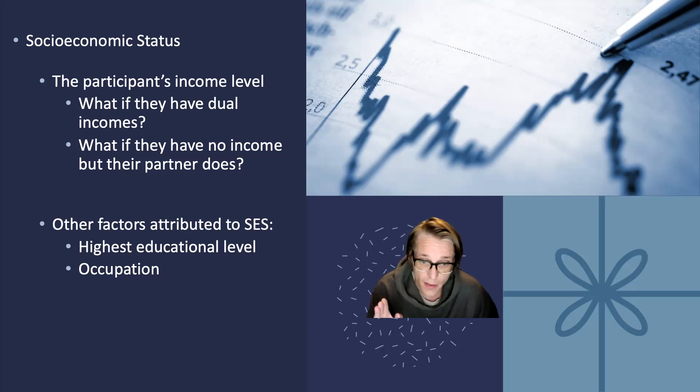We can also construct indexes or scales to measure a concept using multiple data points. An index is constructed by simply accurately scoring assigned to an individual attribute across multiple items, and a scale is a bit more involved as it assigns scores to patterns of responses, recognizing that some of the items reflect a weaker degree of the variables, while others have a more strongly related one.